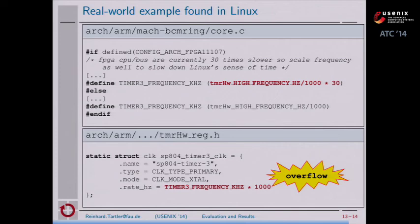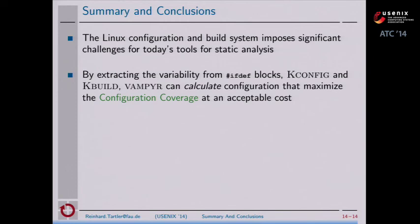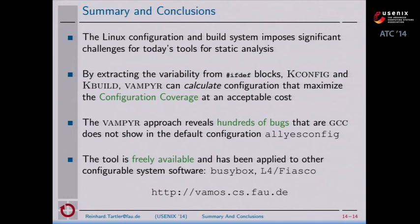To summarize and conclude: the Linux configuration and build system imposes significant challenges for today's tools for static analysis. By extracting the variability of ifdef blocks, kconfig, and kbuild, Vampir can calculate configurations that maximize the configuration coverage at an acceptable cost in a way that is usable for day-to-day operations. The Vampir approach reveals hundreds of bugs that GCC does not show in the default all-yes config. The tool is freely available and we have even ported it to other configurable system software including BusyBox, L4, and Fiasco.